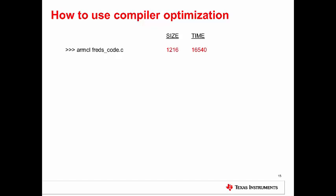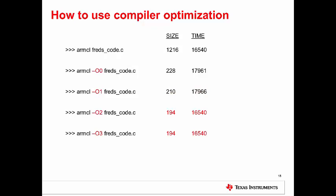Let's look at what happens when Fred adjusts the amount of optimization. When Fred runs his original compile command without any optimization, the size of the executable is 1216 and it runs about 16,500 instructions. When Fred compiles with -O0, the size goes down about 80%, but the runtime actually went up — oops. With -O1, the size continues to decrease but the time gets worse again. Finally, -O2 and -O3 both produce the same result: Fred's executable is the smallest of all, and the runtime is the best we've seen.